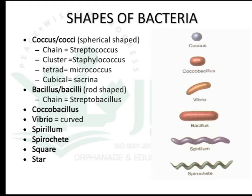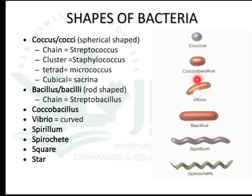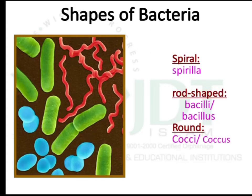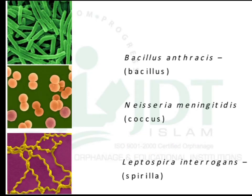Cocci are spherical or round-shaped structures. Bacilli are rod-shaped structures. In between cocci and bacilli is the coccobacillus, which is larger than cocci but smaller than bacilli. Vibrio is a comma-shaped curved structure. Spirochetes and spirilla are also described. An example for bacillus is Bacillus anthracis, for cocci is Neisseria meningitidis, and for spirillum, Leptospira.